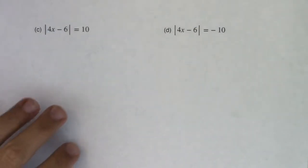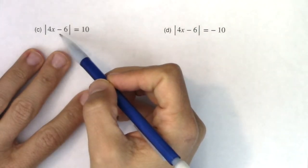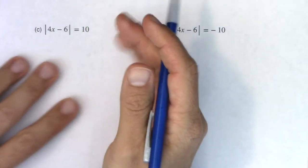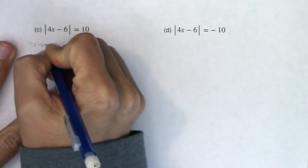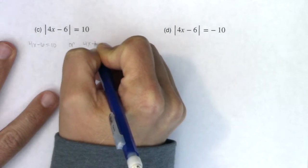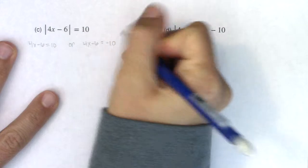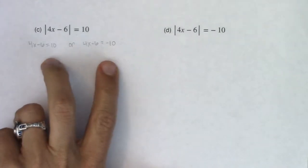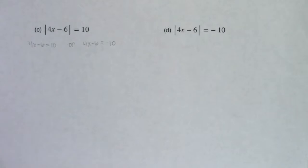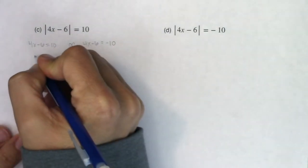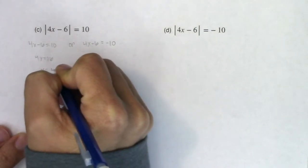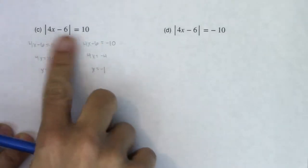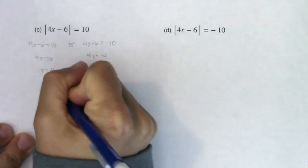Let's continue with example 5c. I have an absolute value expression on the left, an equal sign, and it's already isolated. So because of the equal sign, the mechanics are to set 4x minus 6 equal to 10, or 4x minus 6 equal to negative 10 — setting up two equations, each 10 units from the origin. Simplifying: 4x equals 16, so x equals 4; and 4x equals negative 4, so x equals negative 1. Both solutions hold when verified.